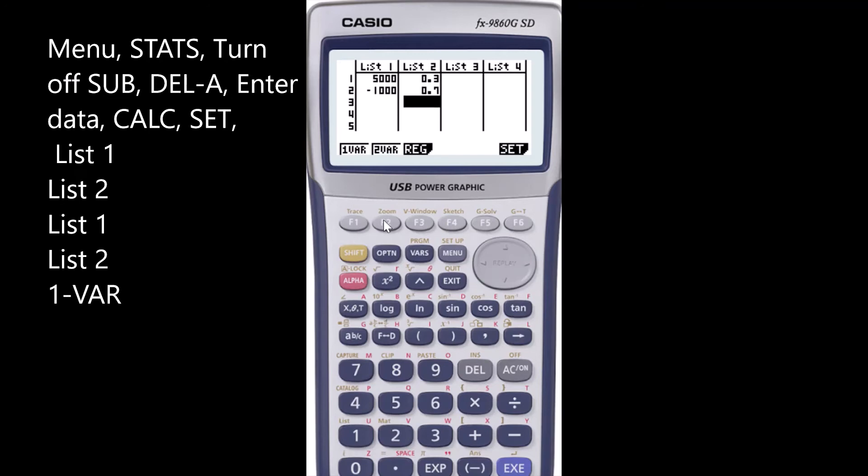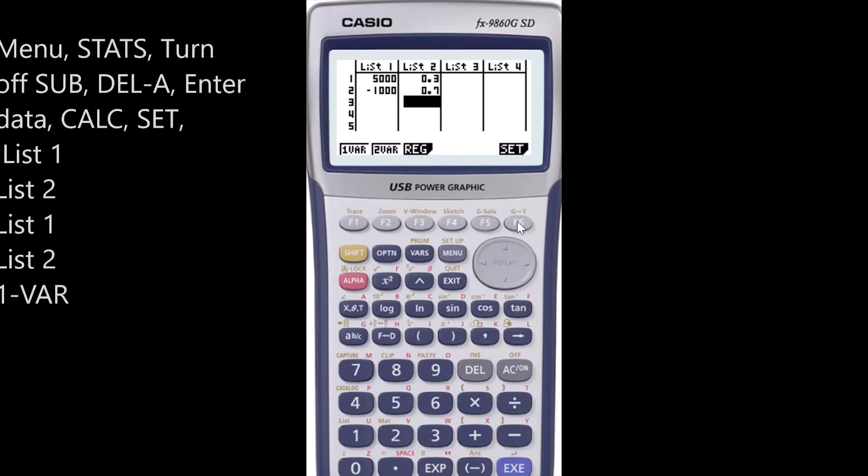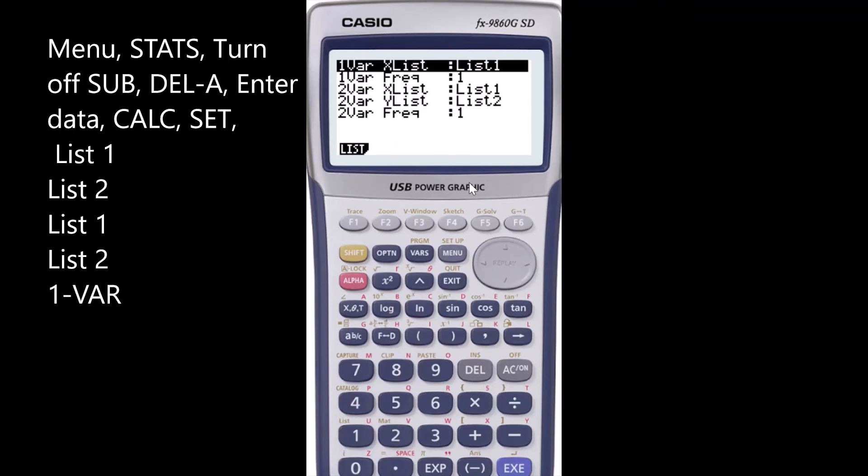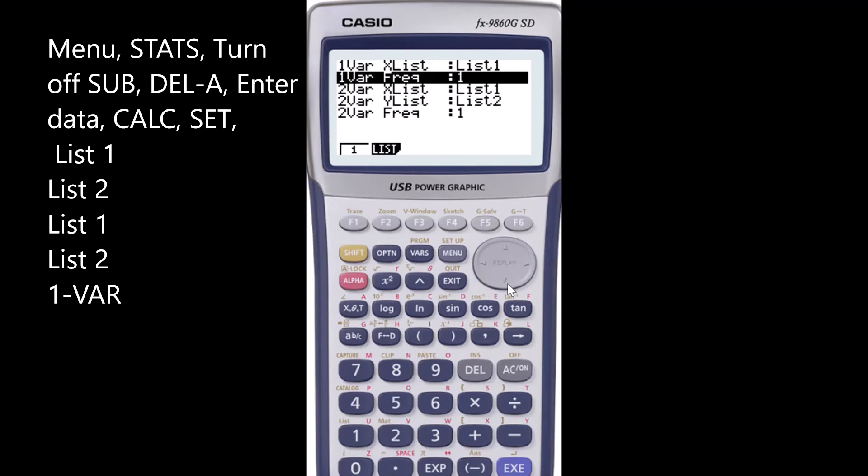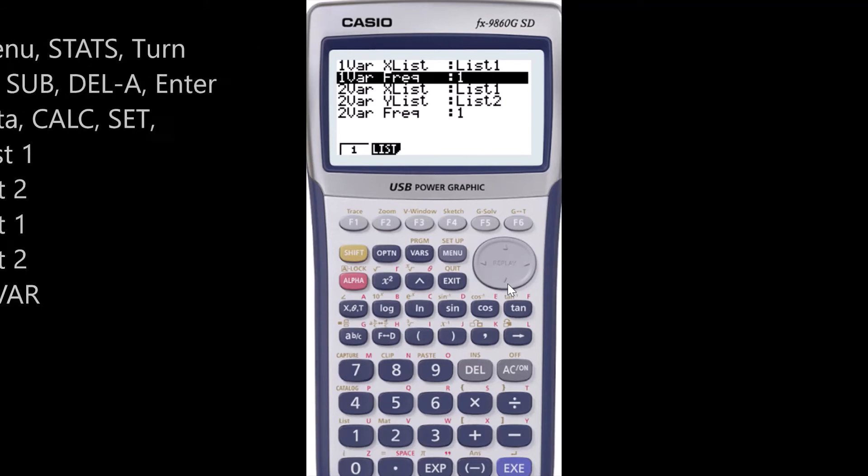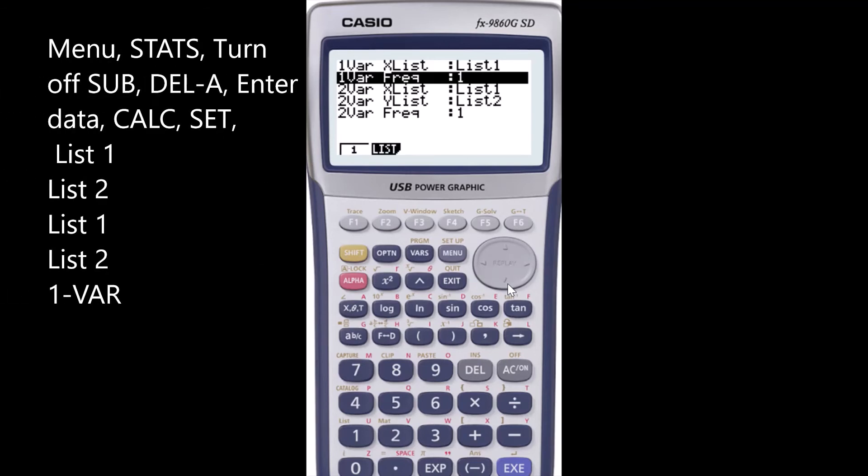Before you select one variable, make sure you go to the settings, which is F6. Here you've got to be very careful. The settings must say list 1, list 2, list 1, list 2, and then 1. I can see that the second one says 1. I must change that, otherwise you'll get the wrong result.